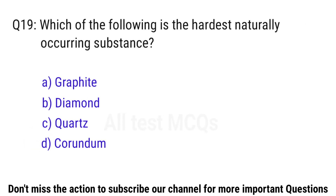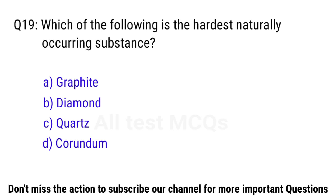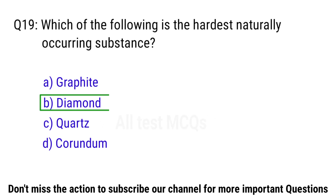Q19. Which of the following is the hardest naturally occurring substance? The right answer is option B. Diamond.